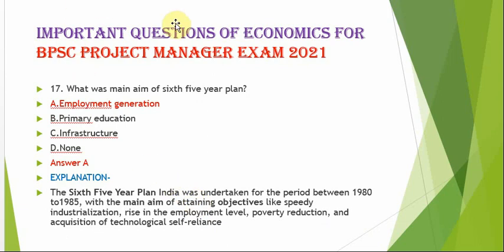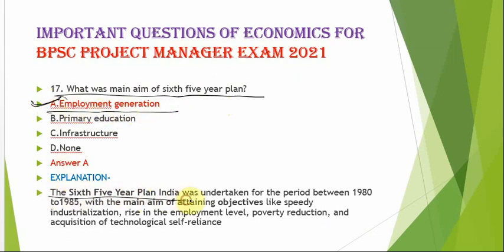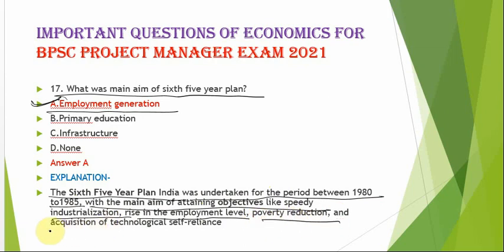The next question is: what was the main aim of the Sixth Five Year Plan? The correct option is option A — employment generation. The Sixth Five Year Plan covered the period from 1980 to 1985, with the main aim of achieving speedy industrialization, a rise in the employment level, poverty reduction, and the acquisition of technological self-reliance.